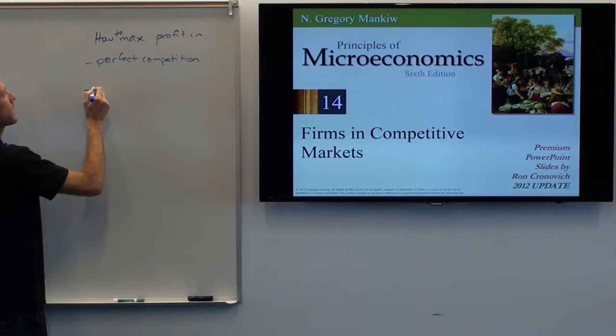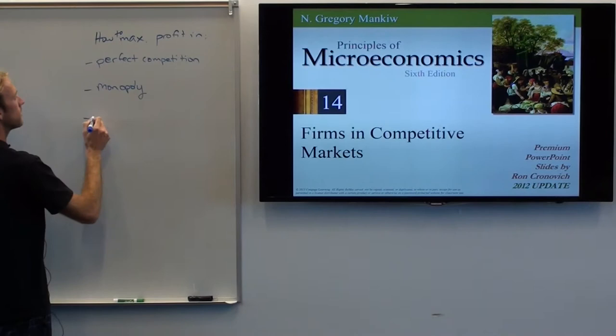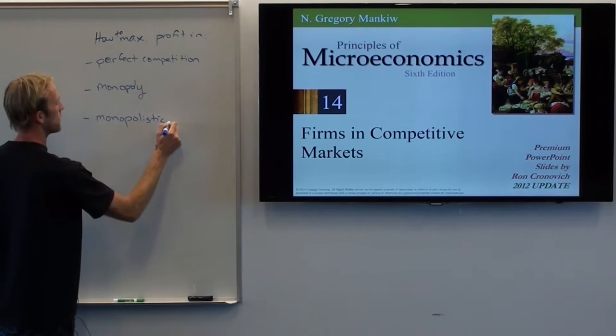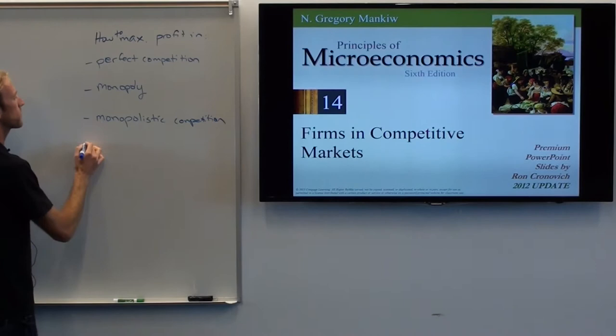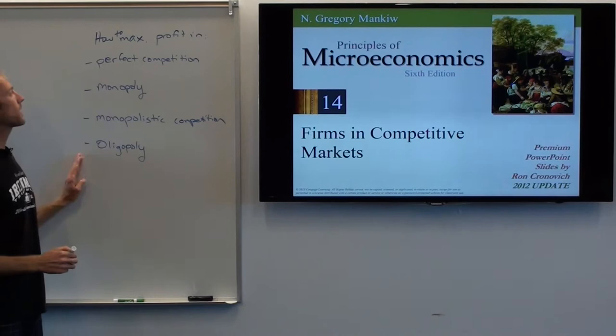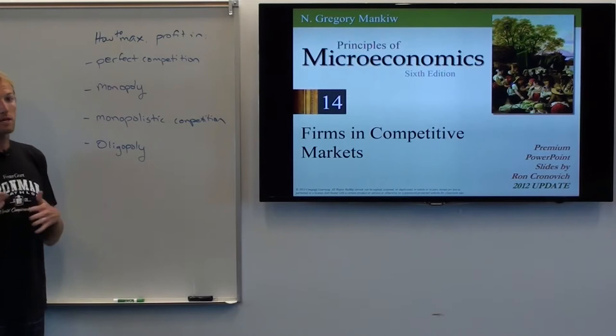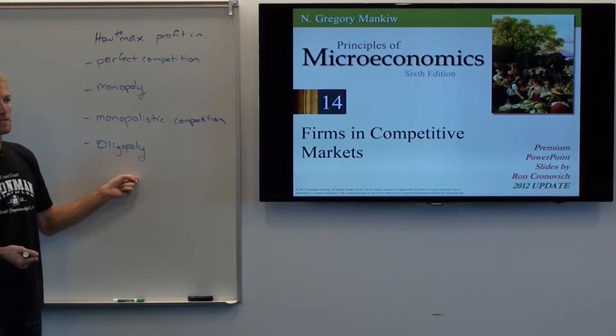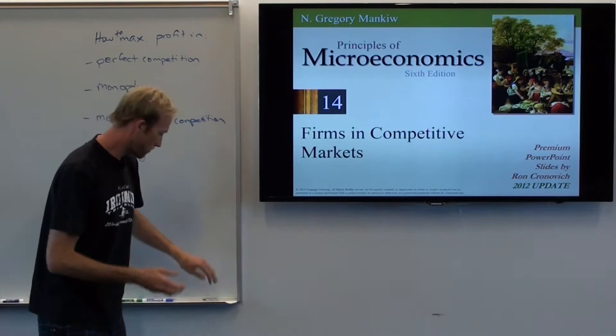Then we're going to talk about how to maximize profit if you own a monopoly, then monopolistic competition, and finally oligopoly. So we're looking at four different types of companies and asking: how do we maximize profit — meaning how much should I produce and what price should I charge — in each type? That's chapters 14, 15, 16, and 17, and then this class is over.